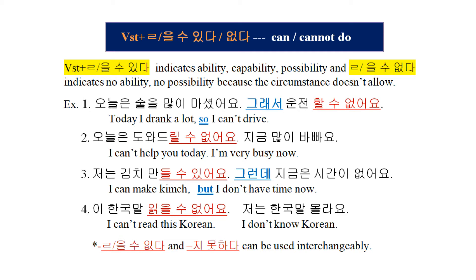Example 4: 이 한국말 읽을 수 없어요. 저는 한국말 몰라요. — I can't read this Korean. I don't know Korean. Note: 을 수 없다 and 지 못하다 can be used interchangeably — those two patterns mean almost the same.